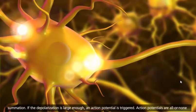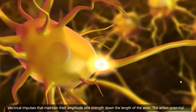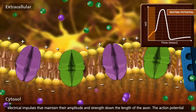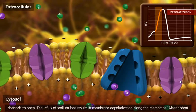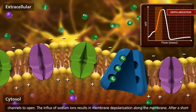Action potentials are all-or-none electrical impulses that maintain their amplitude and strength down the length of the axon. The action potential travels down the axon when the depolarization of an area of membrane causes adjacent voltage-gated sodium ion channels to open. The influx of sodium ions results in membrane depolarization along the membrane.